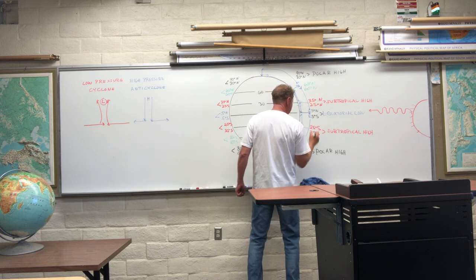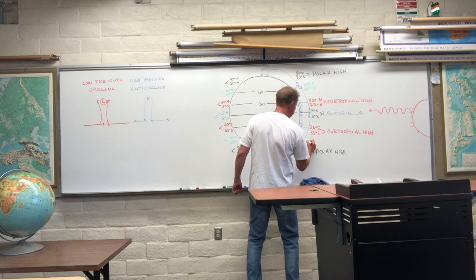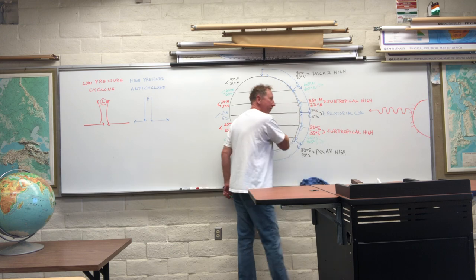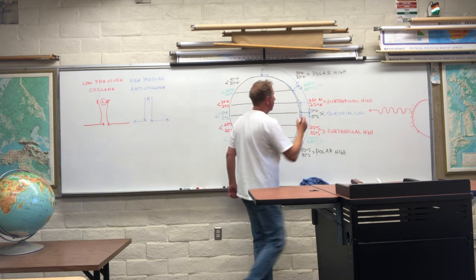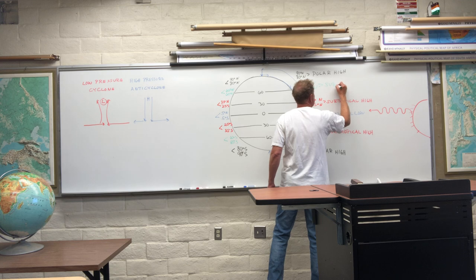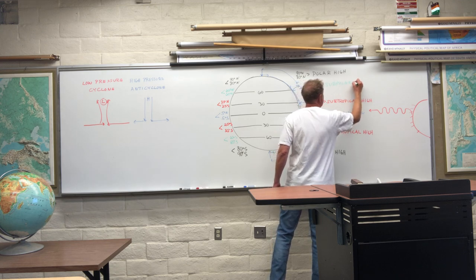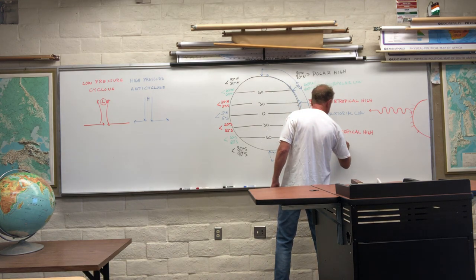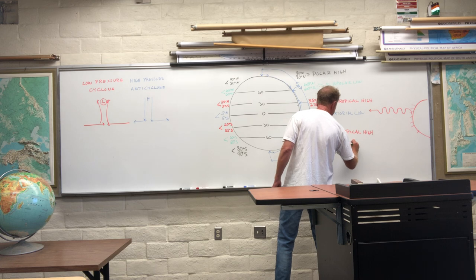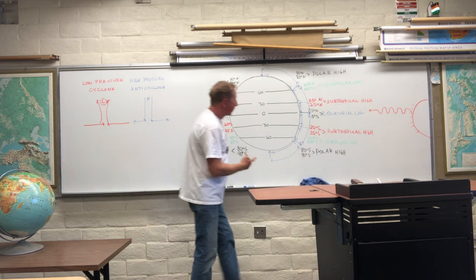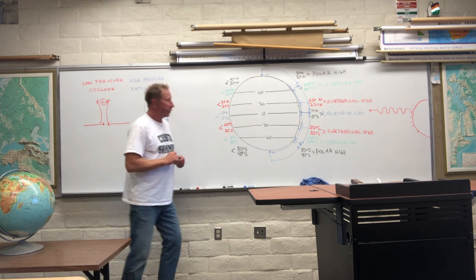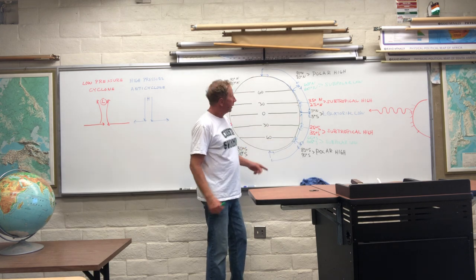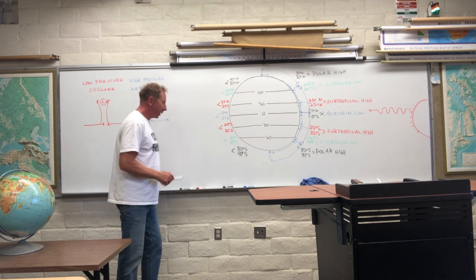This is a belt of low pressure called the subpolar low. And those are the pressure belts that exist on our planet. Now, on your diagram, it shows three cells in each hemisphere — this is the Hadley, the Ferrel, and the polar cell. So we create something called tricellular circulation. Next, let's put the winds in.